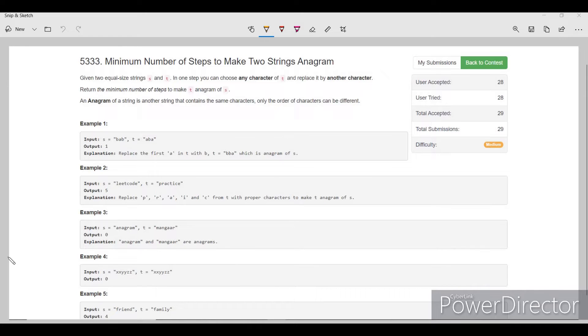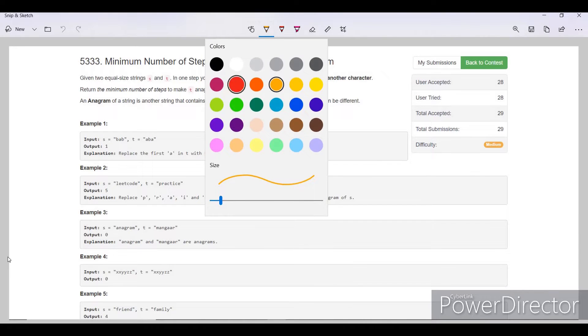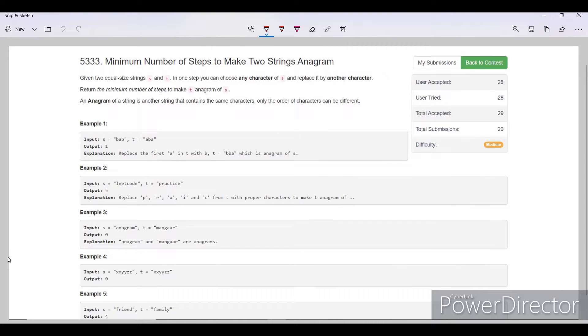In this problem we are given two strings S and T which are of equal size, and in one step we can choose any character of T and replace it by another character. We need to return the minimum number of such steps to make T and S anagrams.